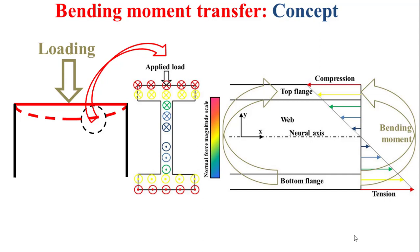These compression and tension forces will create the bending moment. Based on this observation, we can deduce that the bending moment is transferred from a child member to a parent member principally through the flanges.